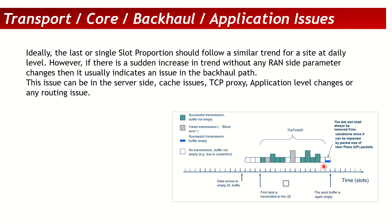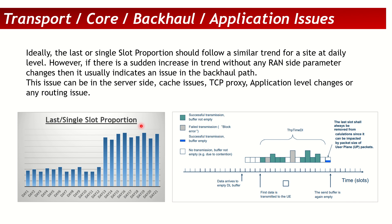Now why is this important? If you have a site, cluster, or network where the last slot or single slot proportion suddenly changes, that indicates an issue at a higher layer — a server-side issue, cache issue, TCP proxy issue, backhaul issue, or routing issue. It indicates a problem somewhere beyond the RAN, northbound to the RAN, at a backhaul level. You need to monitor the last slot or single slot proportion and check whether it is following a trend.